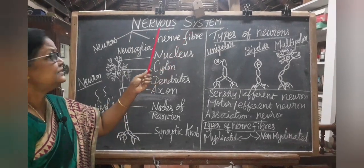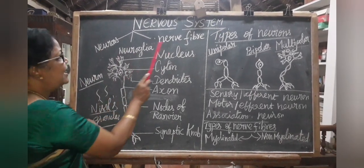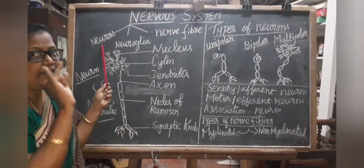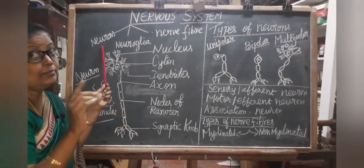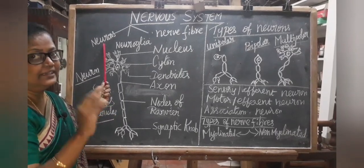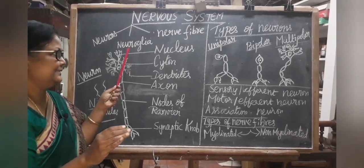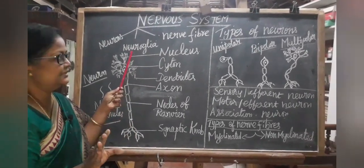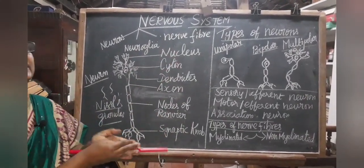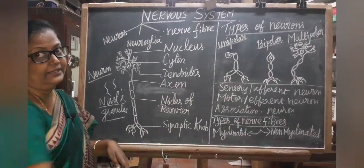The nervous system is made up of three components: neurons, neuroglia and nerve fibers. Neurons are the structural and functional unit of the nervous system. Neuroglia, also called glial cells, do not conduct nerve impulses. Nerve fibers are bundled together to form nerves, which carry information from one place to another.